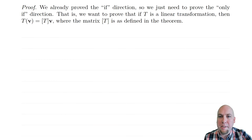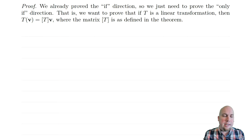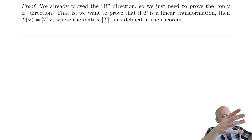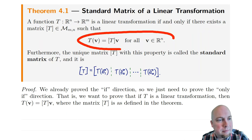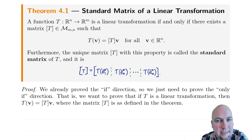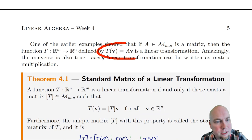Let's prove this big beast of a theorem. Because this is an if-and-only-if theorem, you have two things to prove. You've got to prove the if direction: if there is a matrix such that T of V equals that matrix times V, then T is a linear transformation. We already did that last class when we showed that any function of this form is a linear transformation. So we already did the if direction.